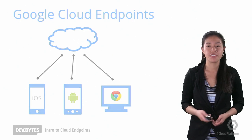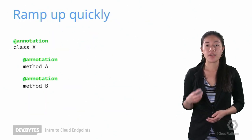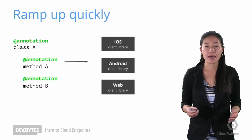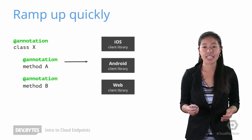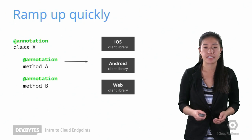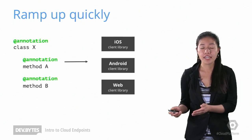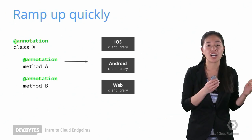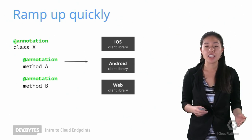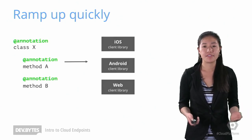On the server, you simply define your API and add cloud endpoint annotations. There's an awesome tool to automatically generate the client libraries that you can drop into your respective apps. You implement the client code to call your API and the server side logic with what to do when the API is called. And then everything else in between is handled by cloud endpoints.